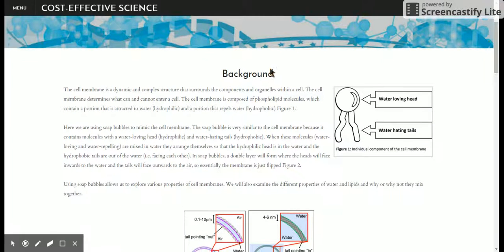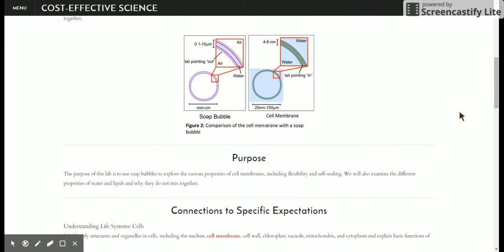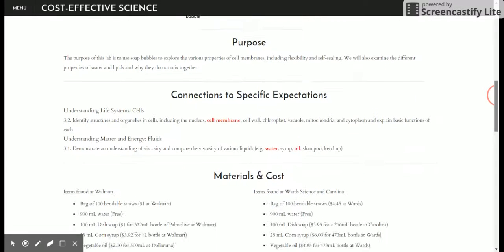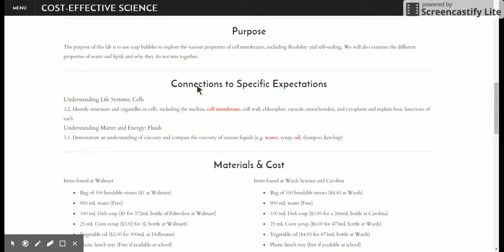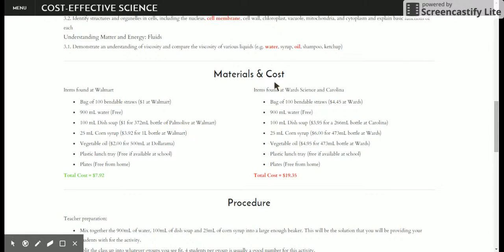The first component is background. I provide background information on each of the activities that I will be performing. Next, I provide the purpose of each lab activity, the connections to the specific expectations, and then here's where I get to the materials and costs for each of the activities. You can see that I compared prices with items found at Walmart compared to items found at Ward Science in Carolina.